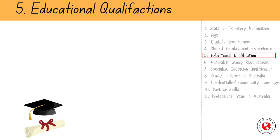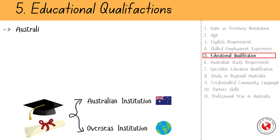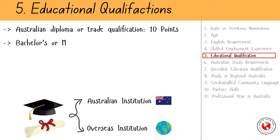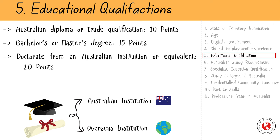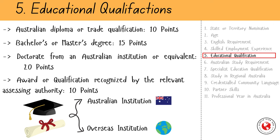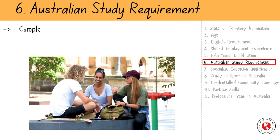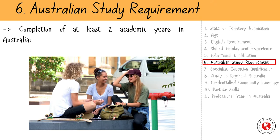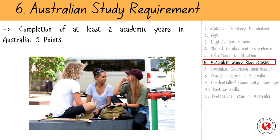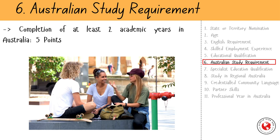The next factor is educational qualifications. You can earn points for qualifications completed in Australia or at any recognized institution overseas. For a diploma or trade-level qualification from an Australian institution, you can get 10 points. A bachelor's or master's degree can get you 15 points. A PhD or doctorate degree can give you 20 points. If you have an engineering degree from an overseas institution, you will need to get it assessed by an assessing authority like Engineers Australia to claim points — a positive skills assessment earns 10 points. The next factor is Australian study requirement: completing at least 2 years of full-time study in Australia can earn you 5 points, applicable if you have an Australian degree, diploma, advanced diploma, or trade qualification.